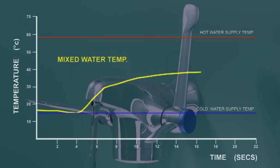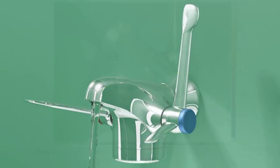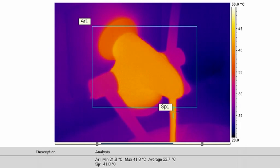The health guidance note, safe hot water and surface temperatures, recommends that no surface within 2 metres of floor level should exceed 42 degrees centigrade. This thermal image shows the OptiTherm thermostatic tap in use. The parameters at the time were hot supply temperature, 60 degrees centigrade, cold supply temperature, 17 degrees centigrade, mixed water temperature, 41 degrees centigrade.